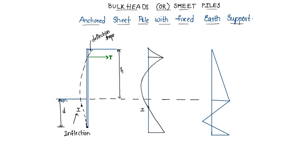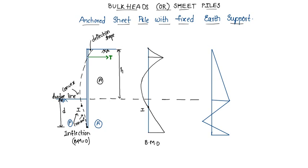The inflection point is where curvature changes — here it is concave and it changes to convex. That curvature change point is called the inflection point. In the anchored sheet pile there is soil below the dredge line. Above the dredge line on one side the soil is active, and on the other side passive. The inflection point is the point where bending moment is zero, also called the contraflexure point.